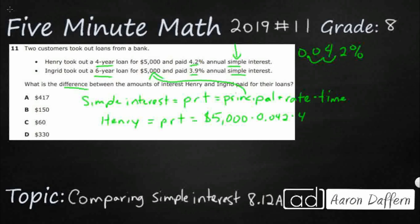This is one I'd definitely recommend pulling out your calculator for. So 5,000 times 0.042 gets you 210, times 4 — there we go — $840.